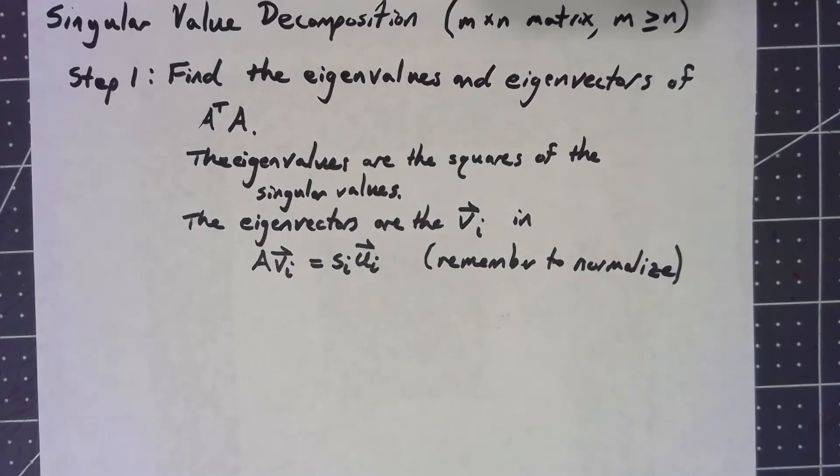So what we're going to do is we're going to find the eigenvalues and eigenvectors of A transpose times A. What this is going to do is give us, in this case, an n by n matrix. Also, because of the way this works, A transpose A is automatically going to be symmetric and positive definite, which are important properties in terms of this whole thing.